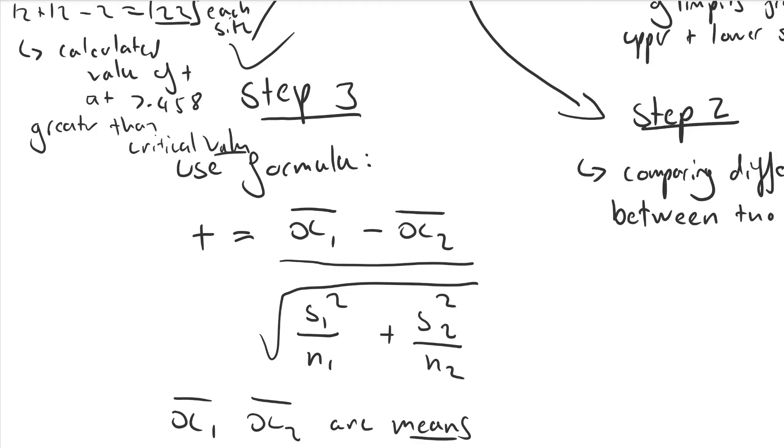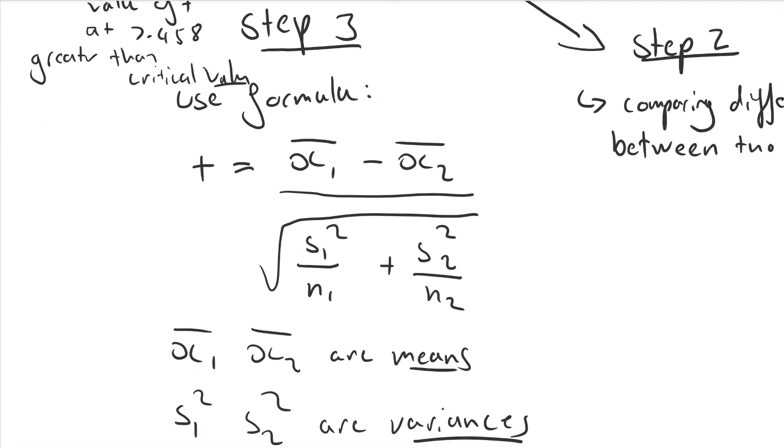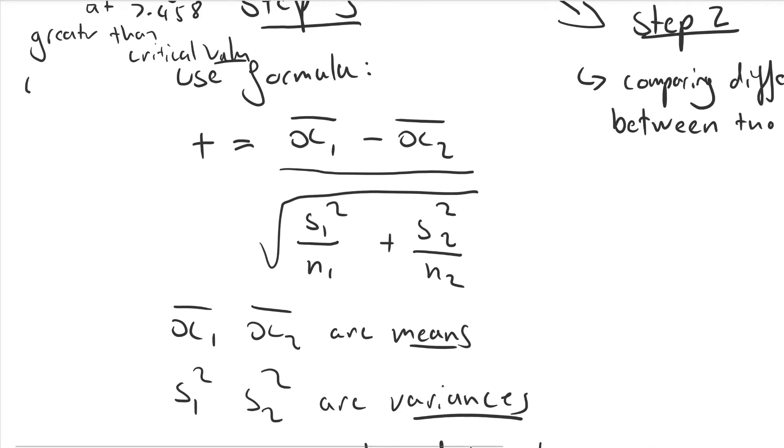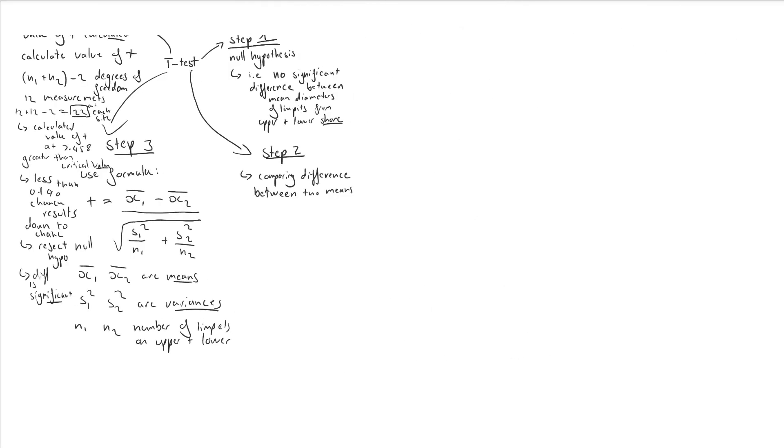And as 7.458 is now greater than the critical value at 0.1% probability, which is 3.792, so our value of t is bigger than the critical value. This means that there's a less than 0.1% probability that the difference between the means is caused by chance. So we can reject the null hypothesis and say that the difference between the two means is significant.